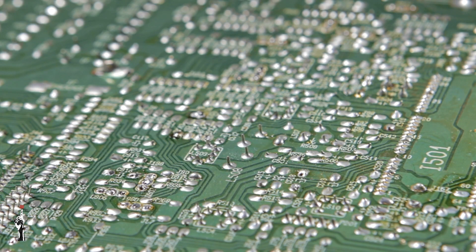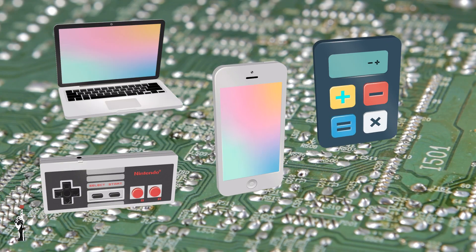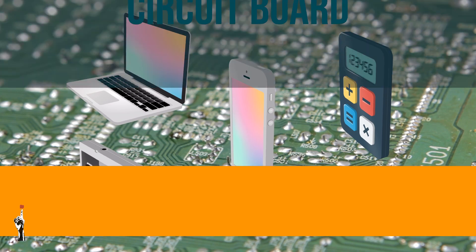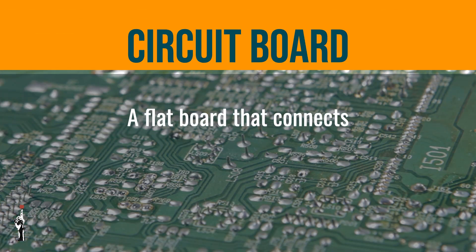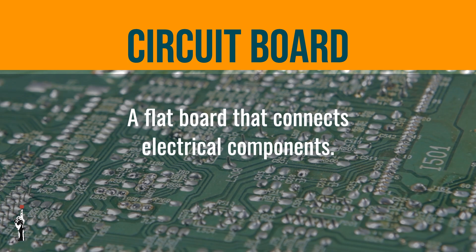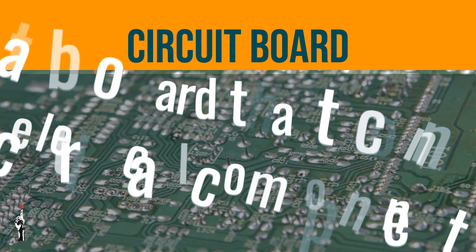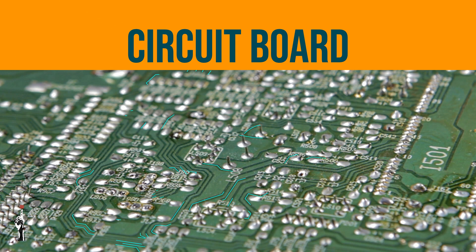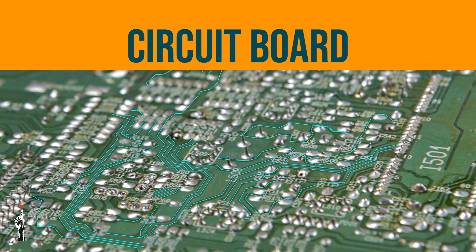Now that we've refreshed our memories, let's look at how all these components come together in a circuit board. This is what you'll find in many electrical devices. A circuit board is a flat board that connects electrical components. Instead of wires running everywhere, the board has tracks that act like roads for the current to flow.